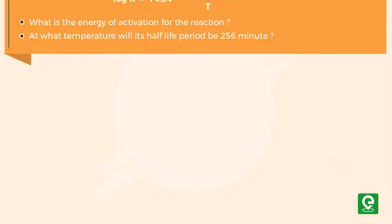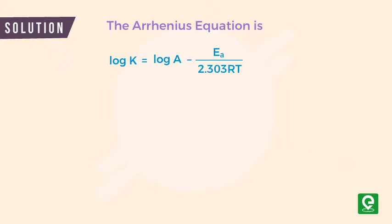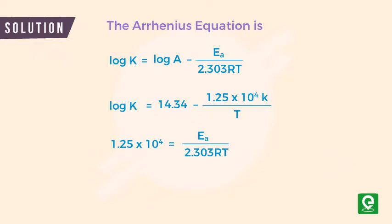Solution 1: We know that the Arrhenius equation is log K equals log A minus Ea divided by 2.303 RT. Comparing the Arrhenius equation with the equation given in the question, we can deduce that 1.25 times 10 to the power 4 is equal to Ea by 2.303 R, which gives us Ea equal to 239.33 kJ per mole.